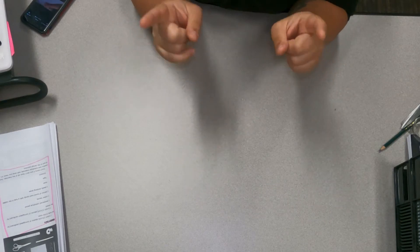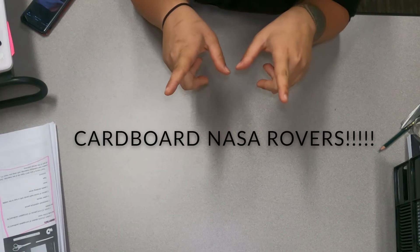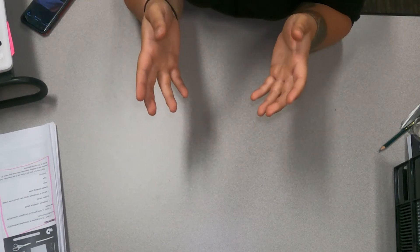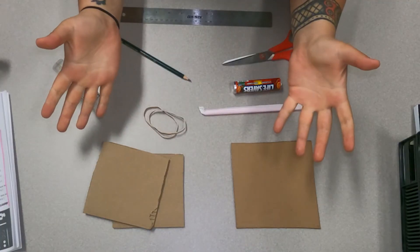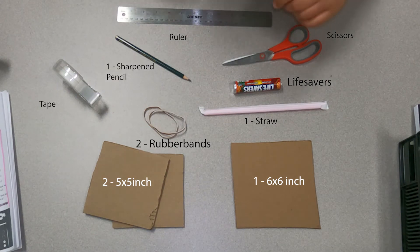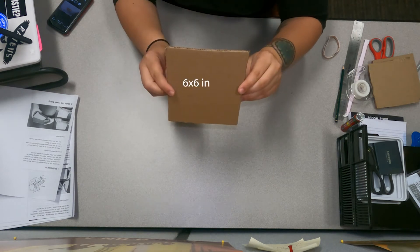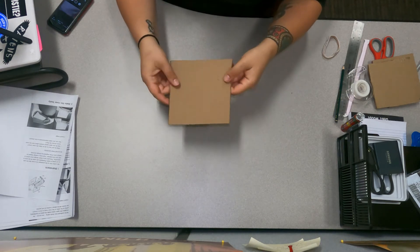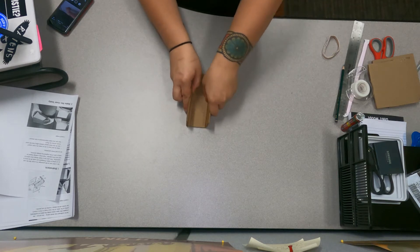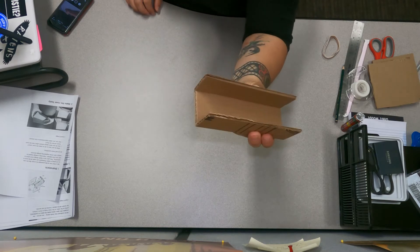Hey everyone, today we are making a NASA rover out of cardboard. You can find the instructions for this on our website. So here we go. Step one, we're going to fold the rover body. You're going to take your six by six piece of cardboard and you're going to fold it into three sections just like this.